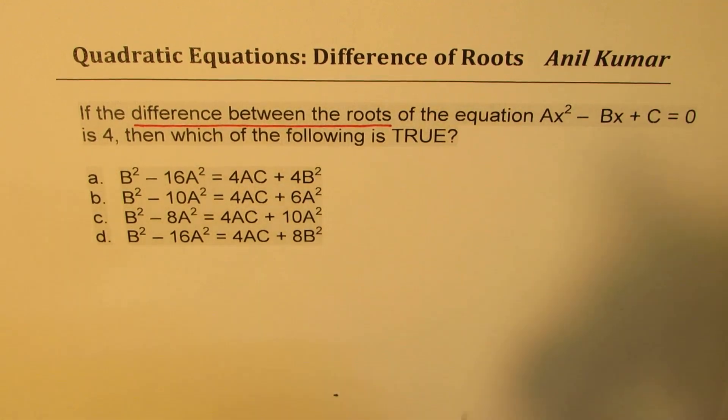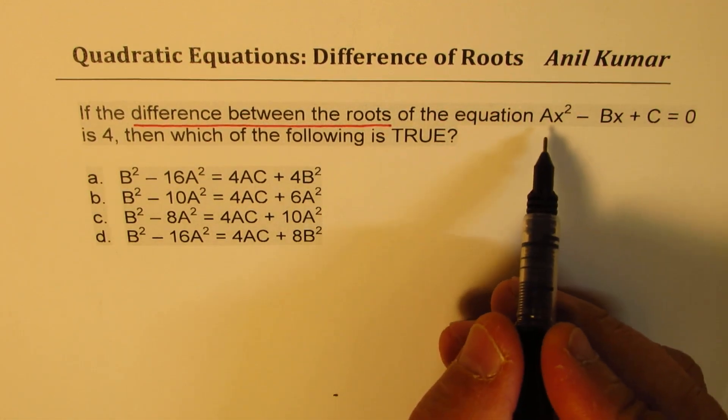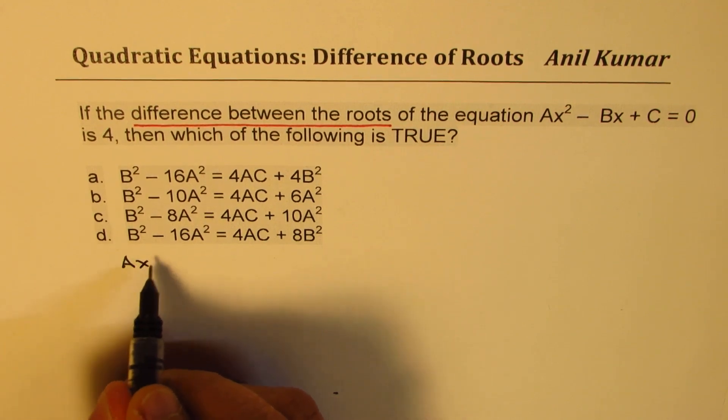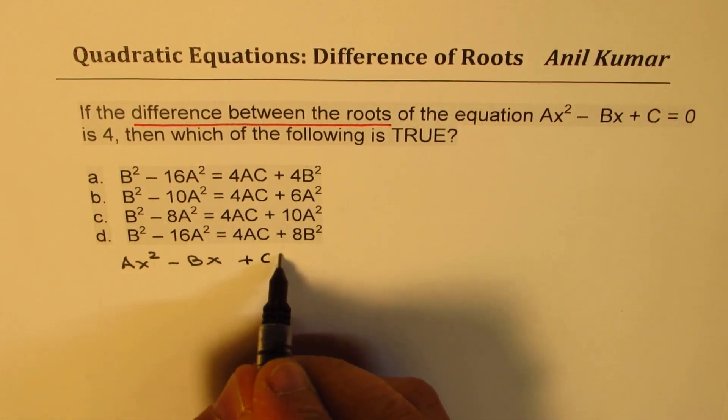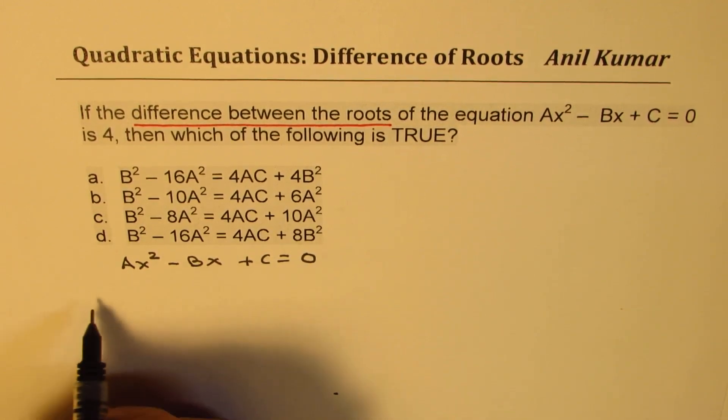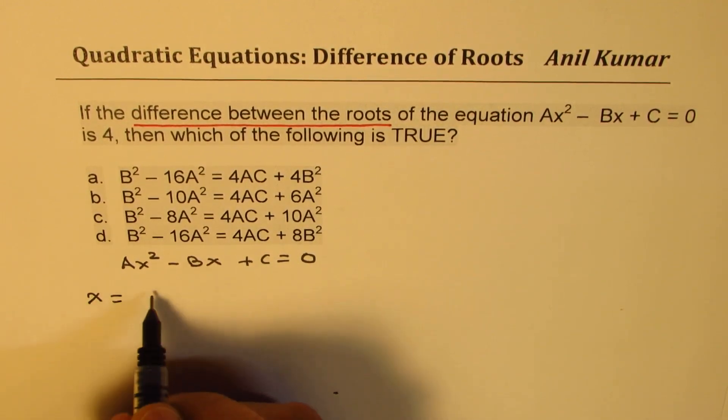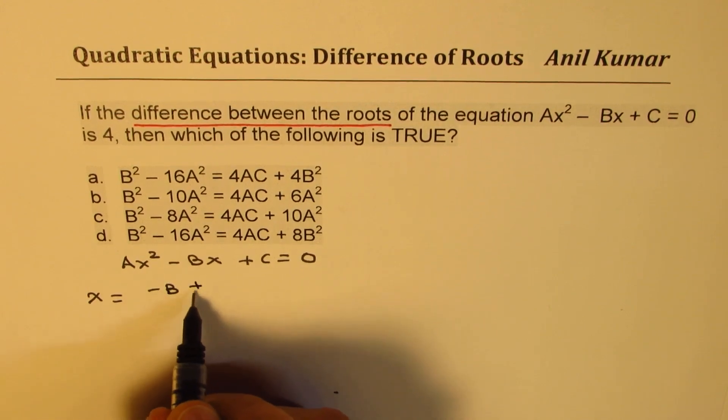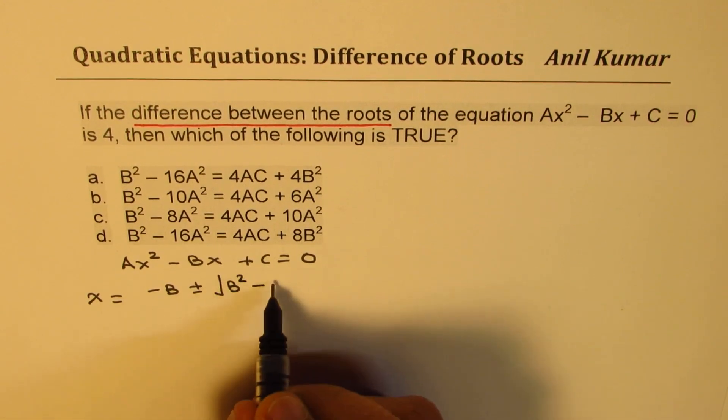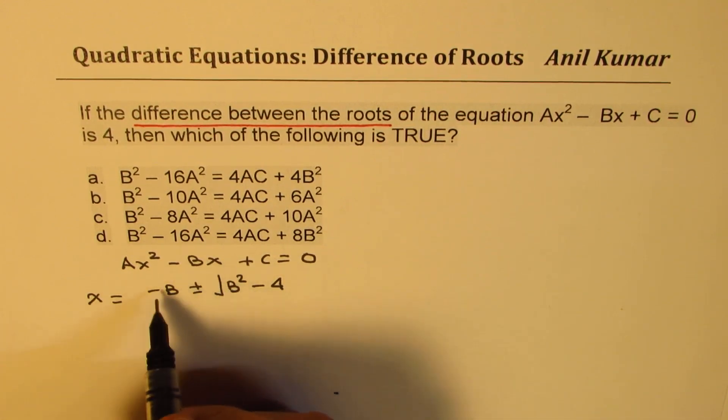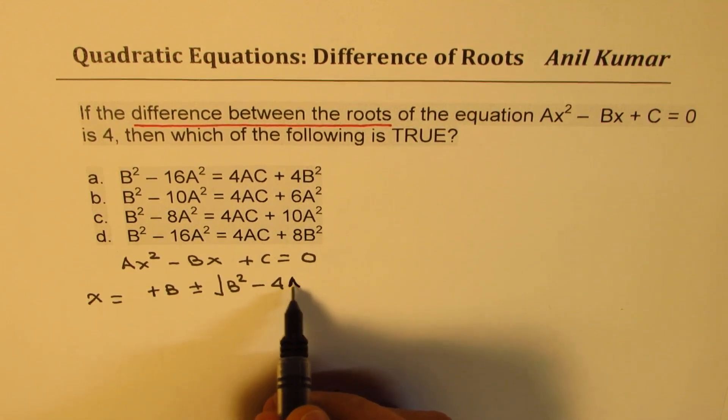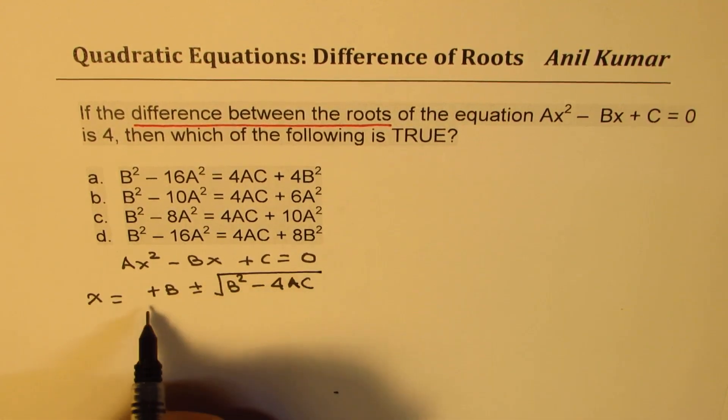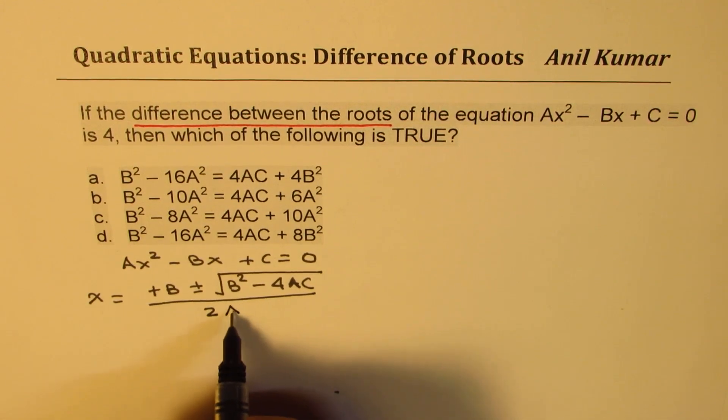In general, let's try to understand. We have this equation ax² - bx + c = 0. What is the solution? x equals minus b plus or minus square root of b² - 4ac. So minus of minus b becomes plus: b ± √(b² - 4ac) over 2a. This is your general solution.